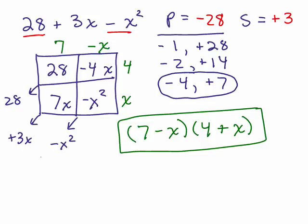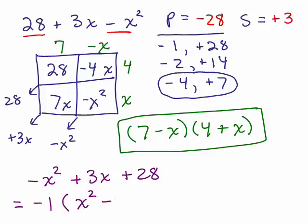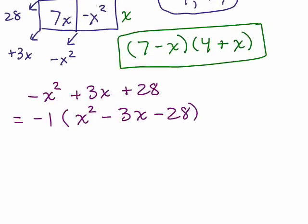An alternative to doing this problem is to write it in descending order. So you're going to write negative x² + 3x + 28, and then factor out a negative 1, which means you're going to change signs. So that's an x², a minus 3x, and a minus 28. Now if you do this, in the end, you're going to have, it's going to look a little bit different, but it will be the same answer, a 7 - x times 4 + x. So let's continue.